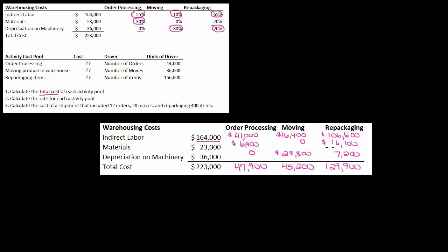In the next video we're going to take these costs, calculate a rate for each activity, and then calculate the cost of a shipment — so you can see how you allocate those rates to an actual order, or in this case a shipment.